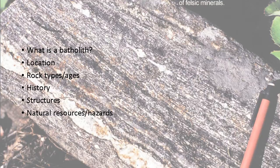First, we will start off by telling you what a batholith is. Next, we will tell you where the Idaho Batholith is located. After that, we will tell you the rock types and the ages of the rocks that make up the Idaho Batholith. Then, we will tell you a little about the history of the Idaho Batholith. Next, we will tell you about some of the structures that form the Idaho Batholith. And finally, we will tell you about some of the natural resources and hazards of the Idaho Batholith.